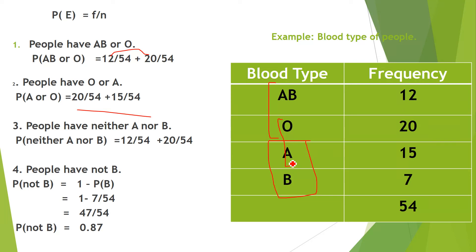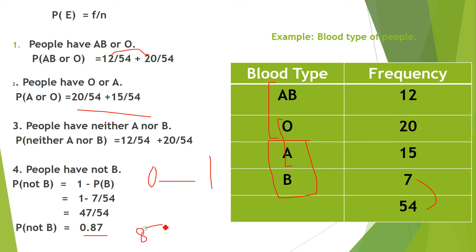For people who do not have B, use the complement rule: since total probability lies between 0 and 1, P(not B) = 1 − P(B) = 1 − 7/54. Simplifying gives approximately 0.87. Multiplied by 100, that is 87%, meaning 87% of people do not have blood type B, while 13% do.